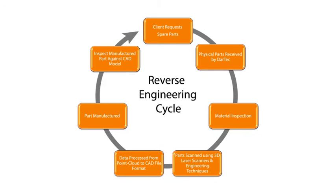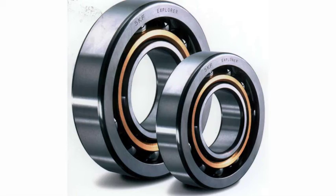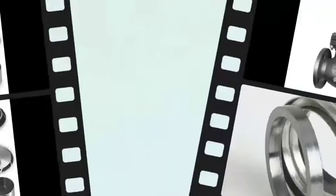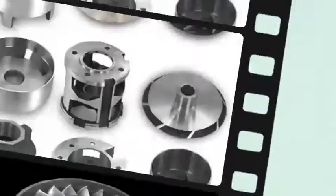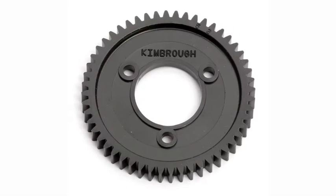Some examples of reverse engineering parts we could offer to our clients include bearings, pumps, valves, impellers, gaskets, bushings, and spur gears.